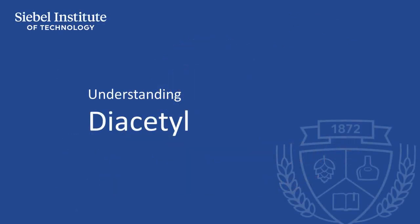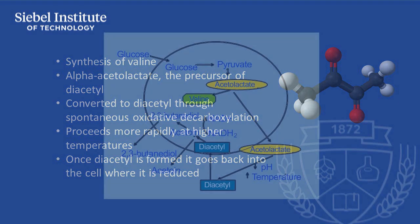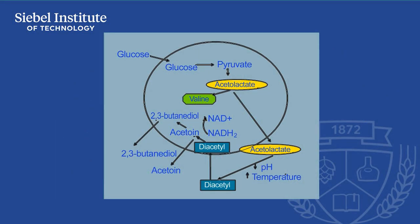Diacetyl is produced during fermentation as a byproduct of the synthesis of the amino acid valine. During the synthesis of valine, one of the intermediate products is a compound called alpha-acetyllactate, the precursor of diacetyl. This compound leaks out of the cell during fermentation, where it's converted to diacetyl through spontaneous oxidative decarboxylation.